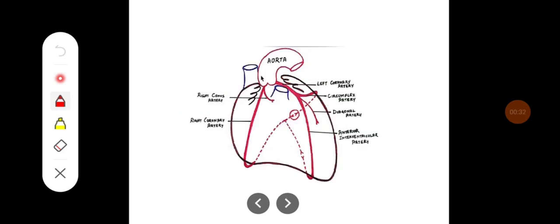This diagram shows the coronary circulation supplied by the left coronary artery and the right coronary artery. The left coronary artery continues as a circumflex artery and also gives off the anterior interventricular artery, whereas the right coronary artery gives a posterior interventricular artery. The right coronary artery mainly supplies the right ventricle, while the left coronary artery mainly supplies the left ventricle and the septum.